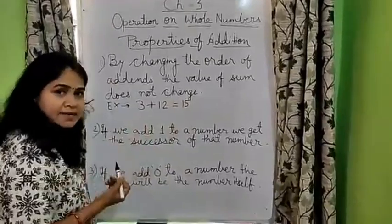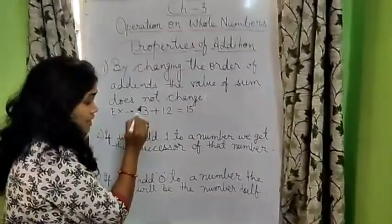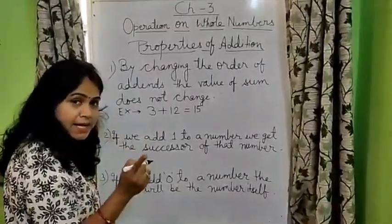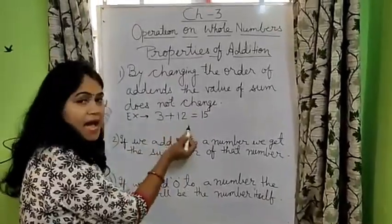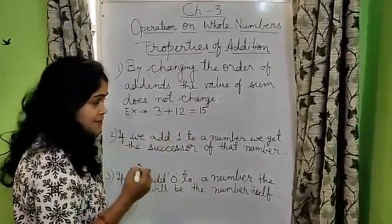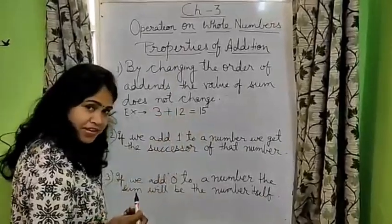What are addends here? 3, the number which are being added are called addends. So 3 and 12 are addends and the sum is 15.